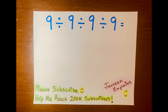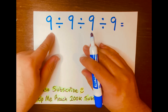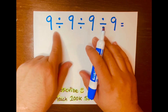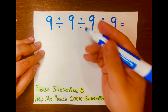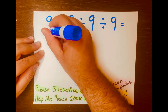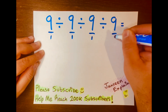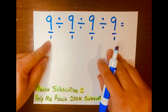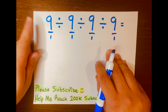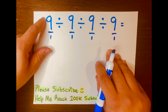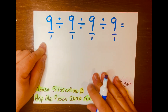Let me show you how you solve this math problem correctly. The first thing you want to do is turn these 9s into fractions, so I'll write 1s at the bottom. We all should know that 9 over 1 equals 9 — it does not change the value — and that will make the math easy.